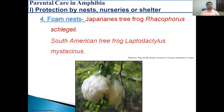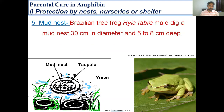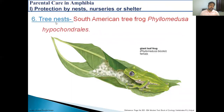The next type of nest is the mud nest. For example, in the case of the Brazilian tree frog, Hyla faber, the male digs a mud nest of 30 cm diameter and 5 to 8 cm deep to protect their defenseless eggs and tadpoles. The next type is the tree nest. The example is the South American tree frog, Phyllomedusa hypochondrialis, where the female lays eggs on tree leaves and glues the margins of the leaves to protect the eggs.